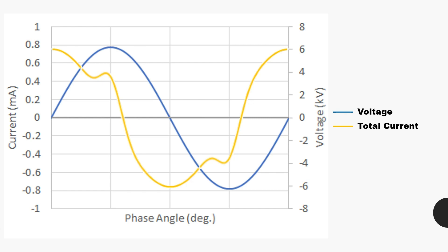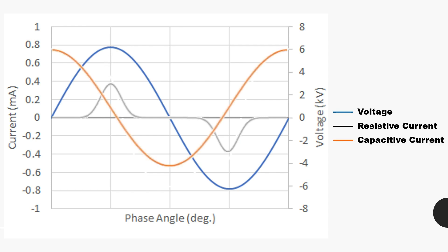Leakage current of arrester has two components: resistive component which is in phase with the supply voltage, and capacitive component which is in lead with respect to the supply voltage.